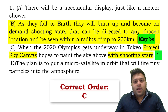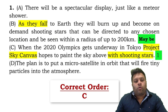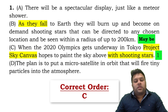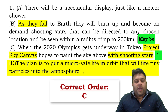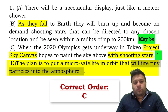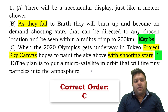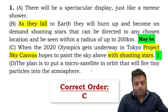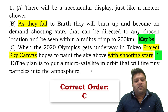When students look at the second sentence and see 'therefore,' they immediately say yes, it must link with shooting stars. But you cannot say yes right away — you have to say maybe and check all remaining sentences. 'The plan is to put a micro satellite in orbit that will fire tiny particles into the atmosphere.' Could 'therefore' refer to tiny particles falling? We don't know. What we must do is elaborate or explain the topic first before moving further.